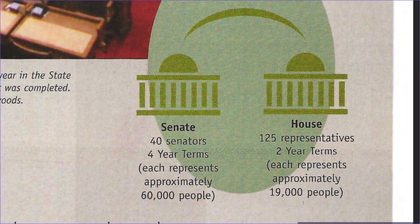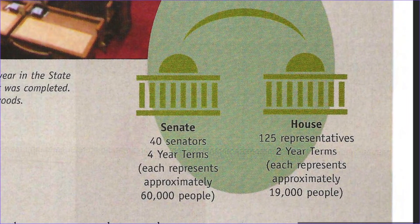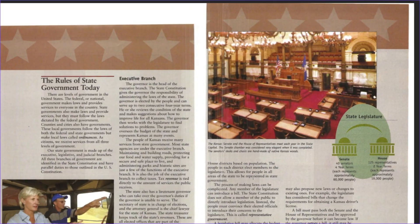Senate: 40 senators, four-year terms, each represents approximately 60,000 people. House: 125 representatives, two-year terms, each represents approximately 19,000 people.